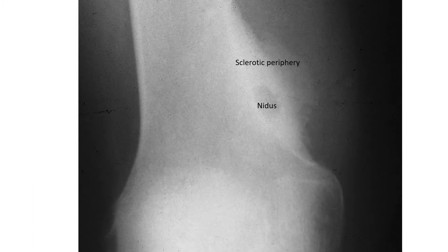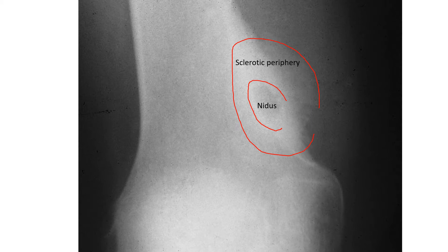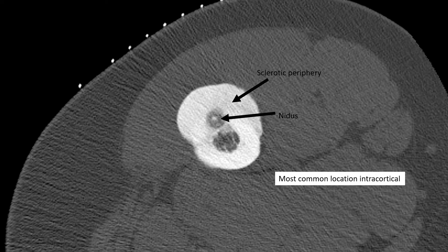This is a plain film, and osteoid osteomas have a very characteristic appearance. What you see is the nidus — this lucent zone — surrounded by a very sclerotic periphery. This lesion is predominantly intracortical. On the CT scan, you get a better look at the nidus. Here's the nidus, and here's the sclerotic bone surrounding it. This is where the original cortical bone ended, and believe it or not, all of this beyond here is peritumoral reaction.